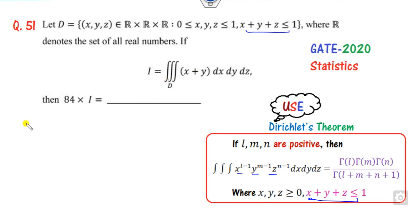That is very simple. I can write this as the integral of X dx dy dz plus the integral of Y dx dy dz. Now you can see that is very simple.